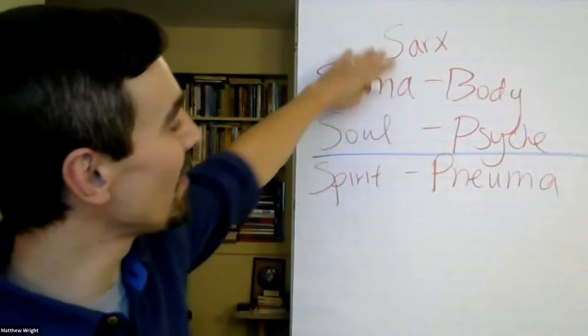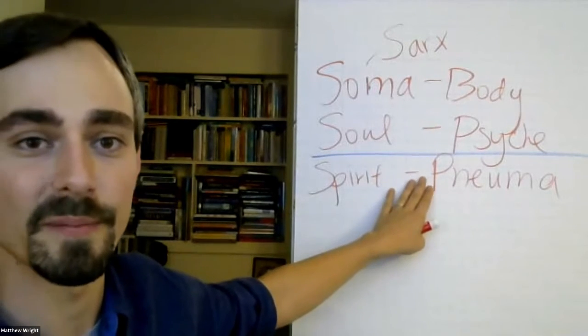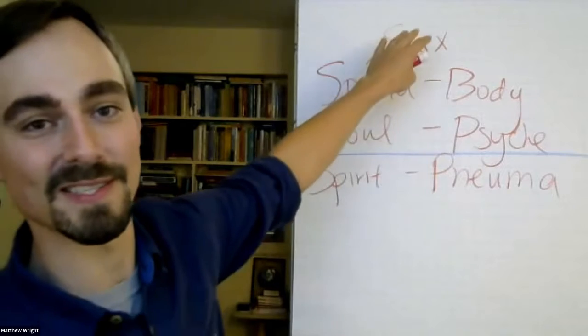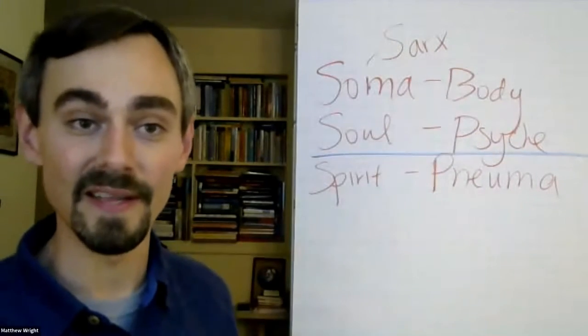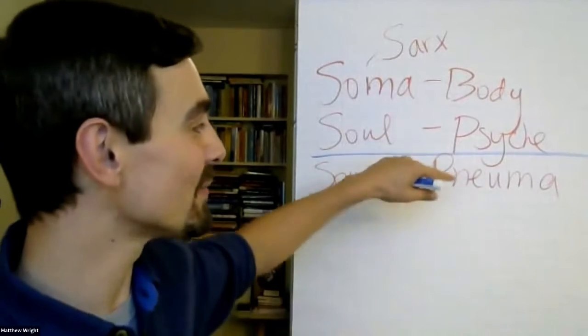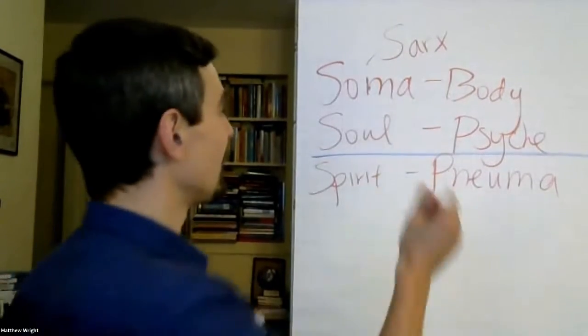But these all move into wholeness when we've been open to the depth dimension through contemplative practice pneuma. And so when pneuma flows into psyche, flows into soma, we become an integrity. And what the contemplative tradition says is what manifests when these are moving in alignment is kardia, heart.